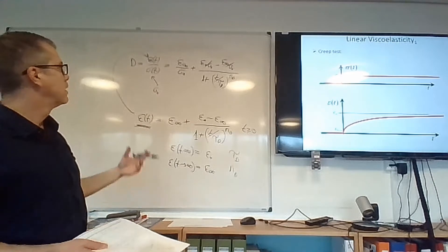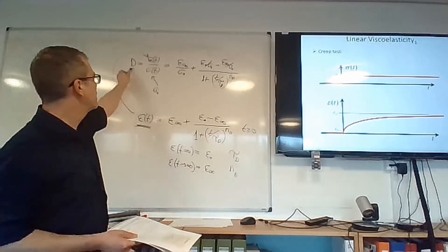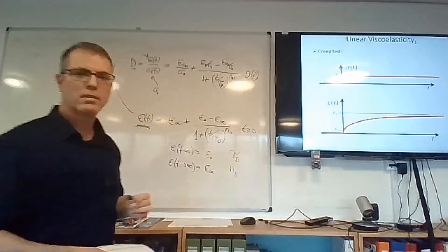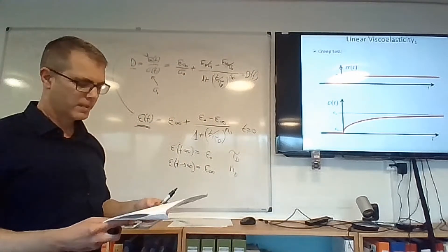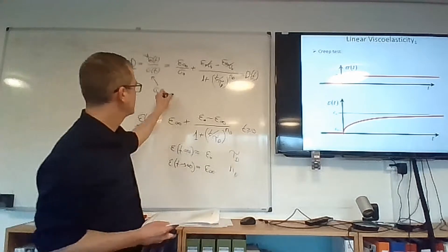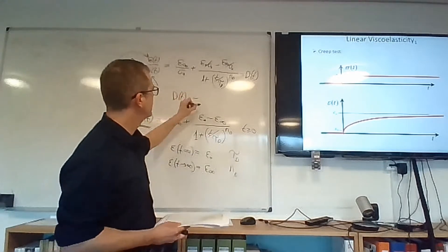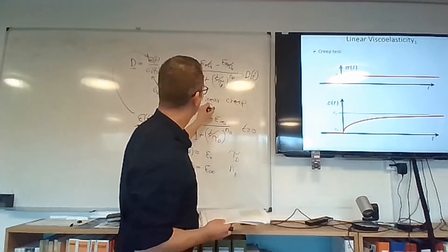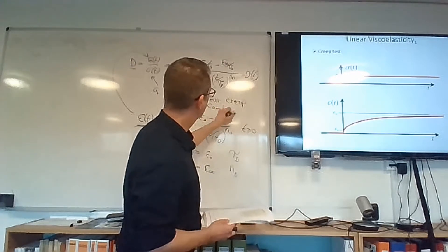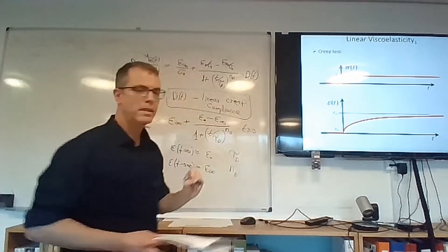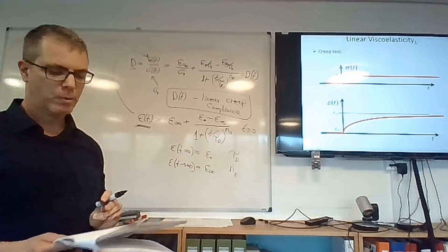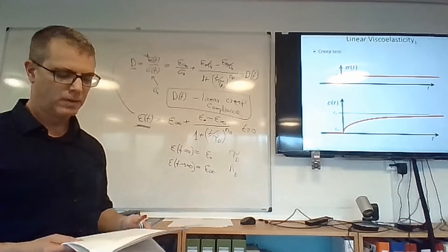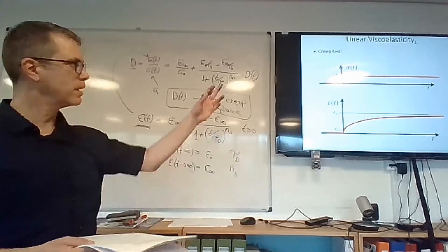And that goes in here. And the stress is just sigma naught. And we end up with the compliance. As you can see, the compliance that we get is not a constant. It's a function of time. So, d of d is called linear viscoelastic creep compliance. And it represents the response of the material to a stress history that is applied like a step. Exactly like in the creep test.